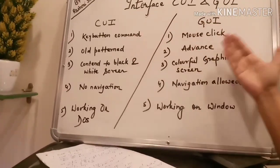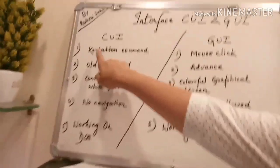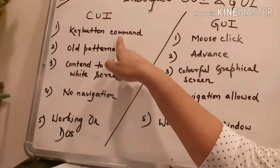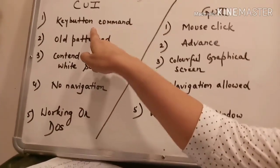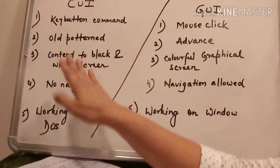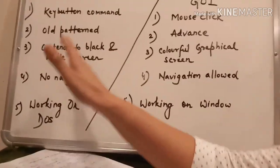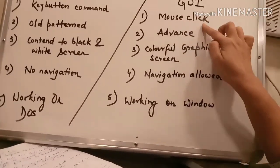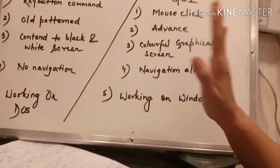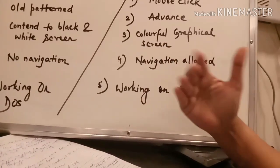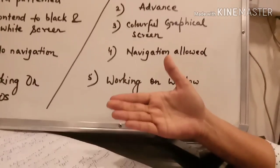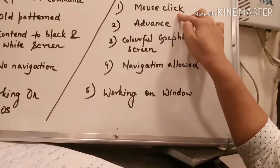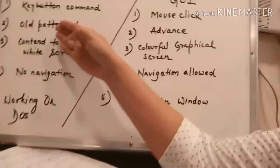CUI aur GUI mein differences dekhte hain. CUI is command-based — you have to write commands for the computer to understand; there is no mouse clicking facility. GUI, on the other hand, works on mouse click — you don't need to learn key commands or type any characters. It is very reliable for users as they can operate it simply with mouse clicks.